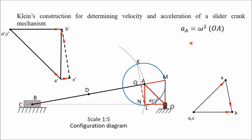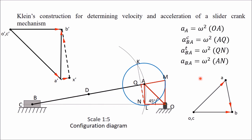OA is proportional to acceleration of A with respect to O, with proportionality constant omega squared. AQ is the centripetal (radial) component of acceleration of B with respect to A, equal to omega² × AQ. QN is the tangential component of acceleration of B with respect to A, equal to omega² × QN. AN is the resultant acceleration of B with respect to A, equal to omega² × AN. The absolute acceleration of the slider equals omega² × ON.